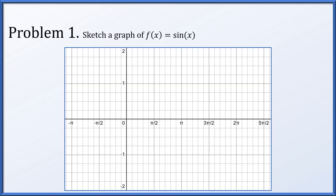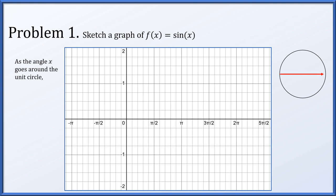In problem one, we're going to sketch a graph of f(x) = sin(x), pretending that we have not seen this graph on our calculators or textbooks. As the angle x goes around the unit circle, and since x is being plugged into sine, we should consider it to be an angle. Here's the unit circle with the initial direction of x pointing straight right as an angle of zero. The sine of x is the height of the point on the unit circle that this arrow is pointing towards. So initially, at an angle of zero, we're pointing straight right, the point on the unit circle has height zero, so the sine of zero is zero — we put that into our plot.